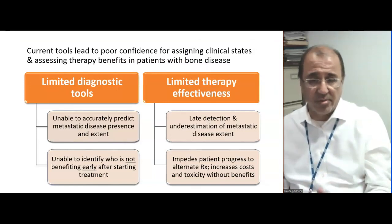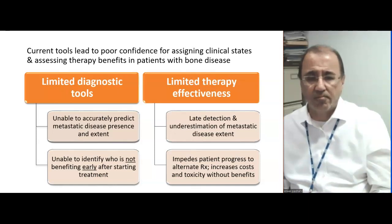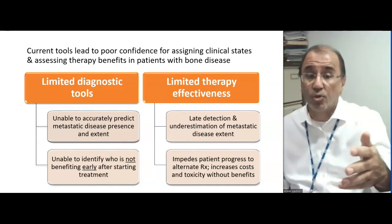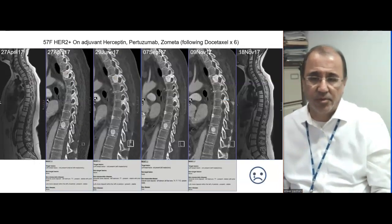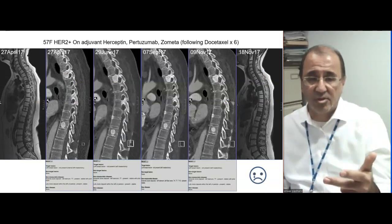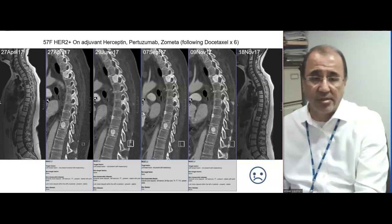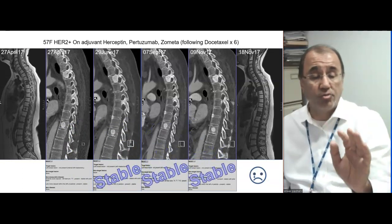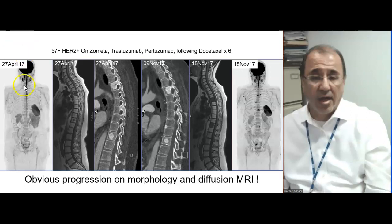Another problem with current imaging tools is we're not able to identify early patients who are not benefiting from a new treatment. This means we impede the progress of patients to alternative therapies, increasing costs and toxicities without providing benefit. Here's an example: a 57-year-old female receiving Herceptin, Pertuzumab, and Zometa following induction docetaxel on a clinical trial. CT scans showed stable disease on RECIST criteria, but whole-body MRI clearly showed the patient was progressing, visible also on diffusion sequences.